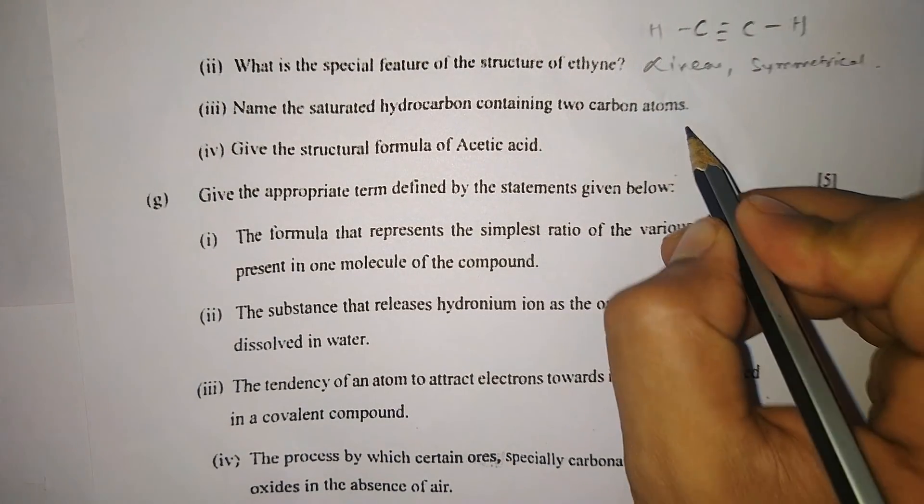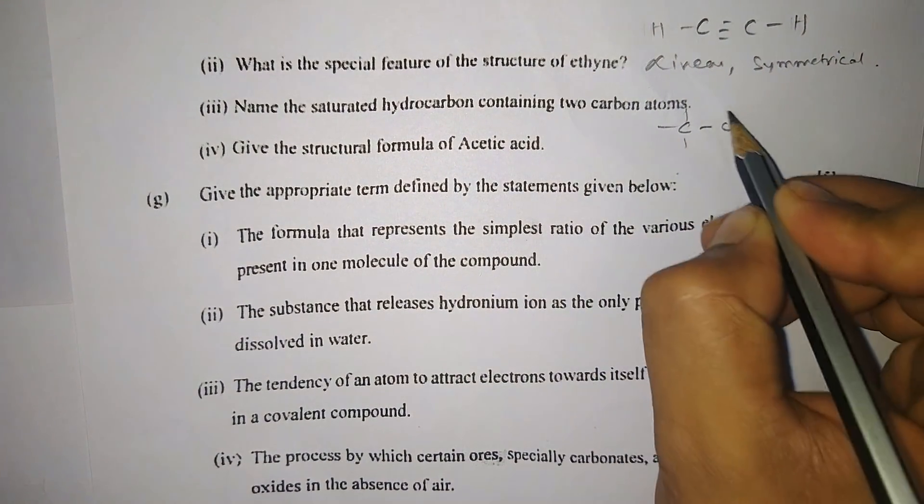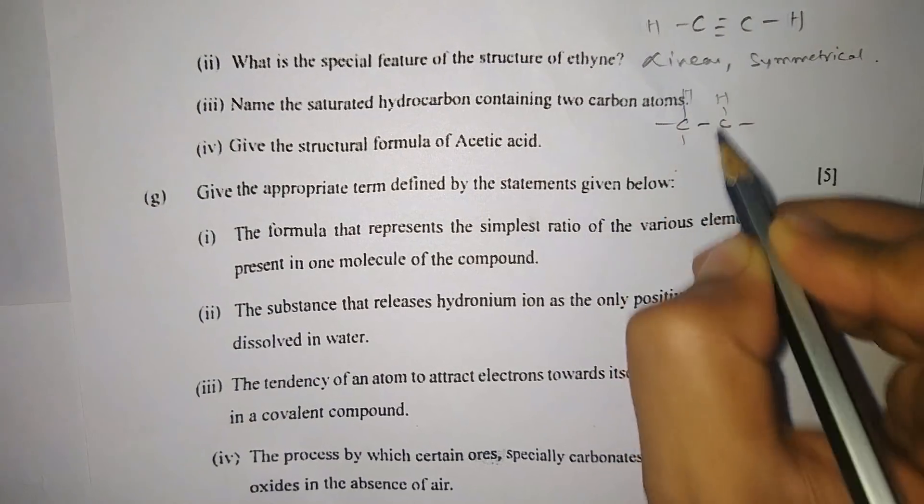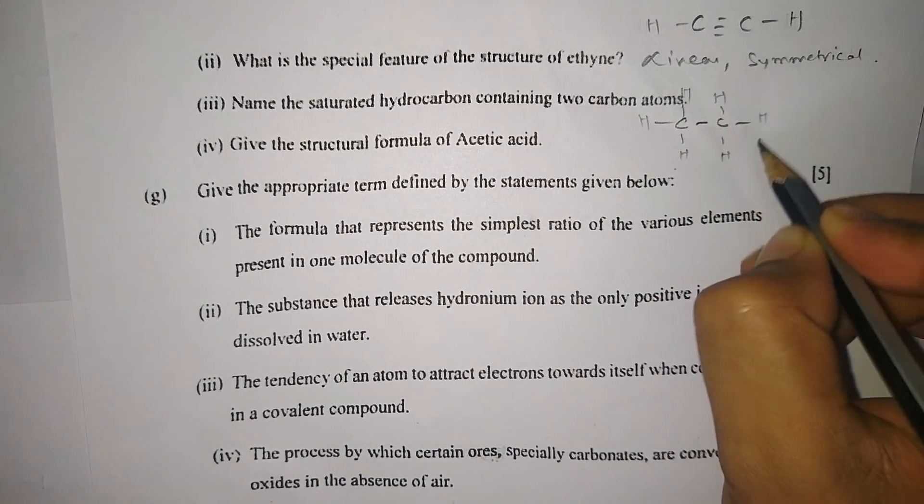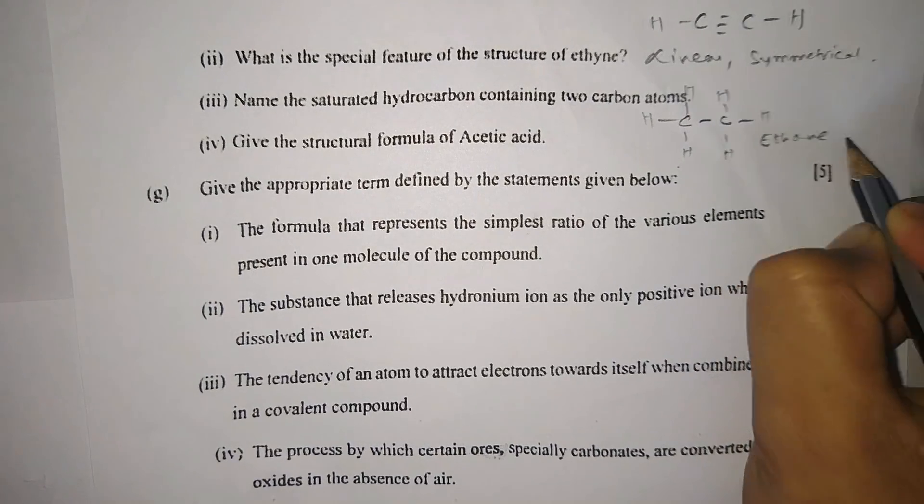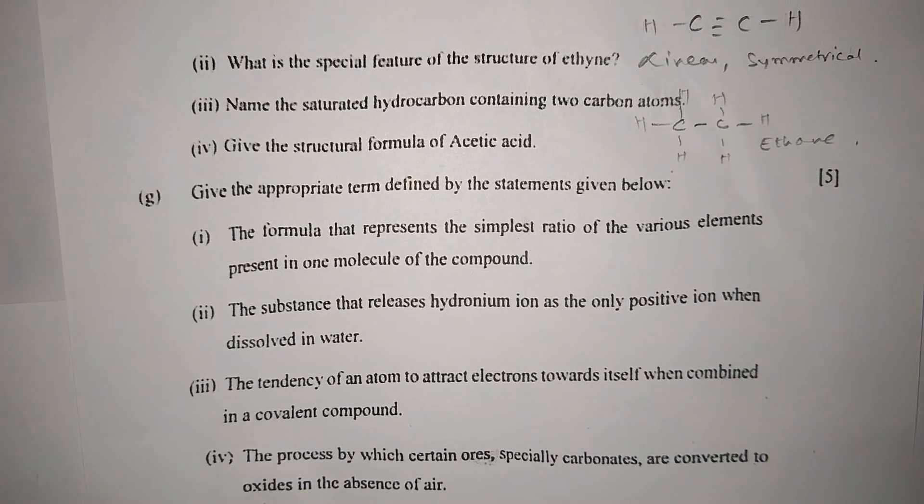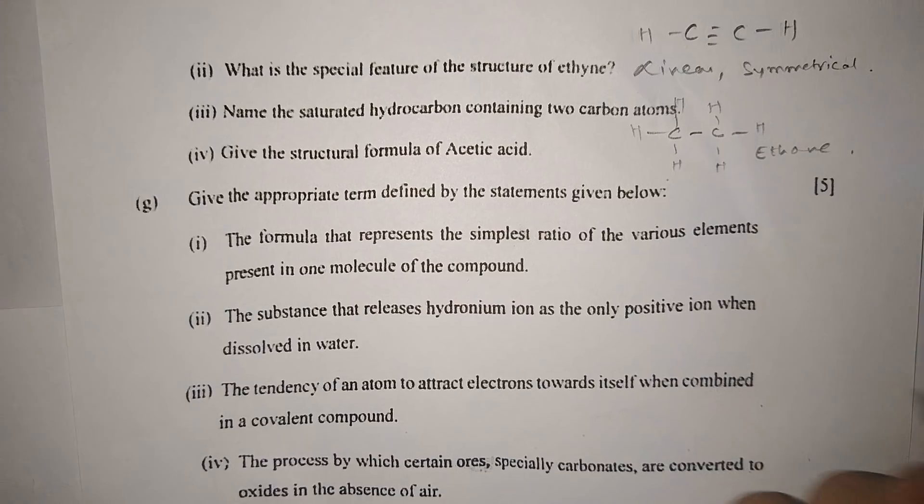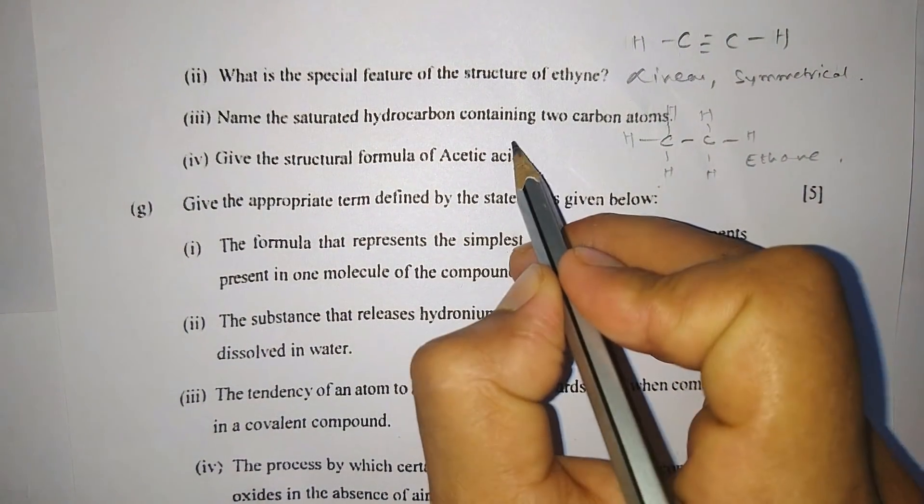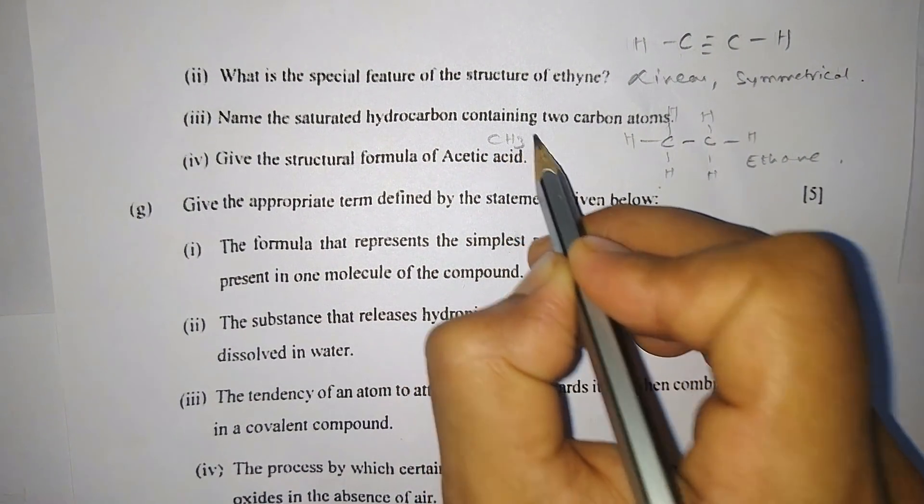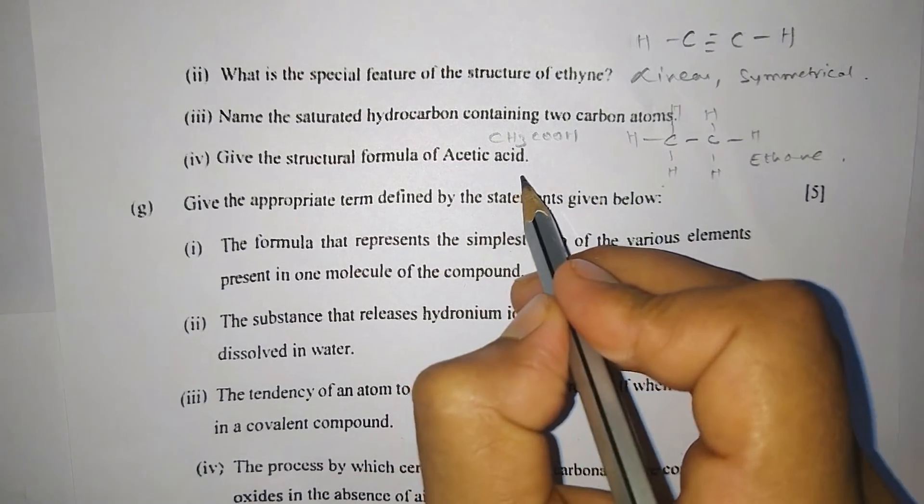Number two: What is the special feature of the structure of ethyne? Let me draw the ethyne structure. You can see the structure is linear and you can also say the structure is symmetrical. Number three: Name the saturated hydrocarbon containing two carbon atoms. Two carbon atoms, saturated, that is satisfied by single bond, so it will be ethane.